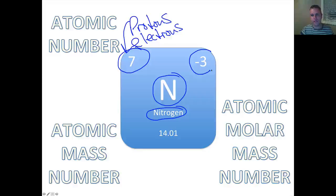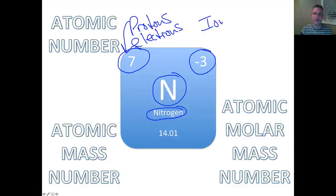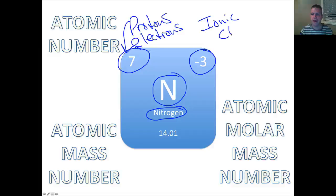This number here on the other side is going to be a positive or a negative. This one is a negative because nitrogen has an ionic charge of negative 3 — or nitride, I should say. We'll talk about ions later, but this is the ionic charge.